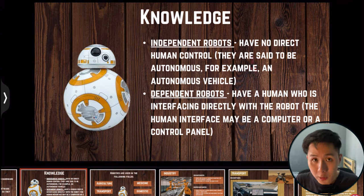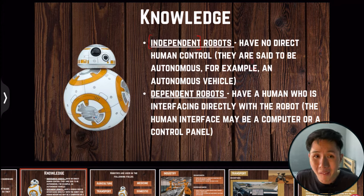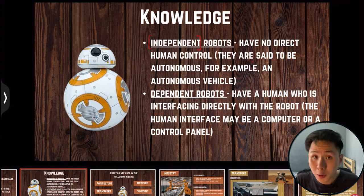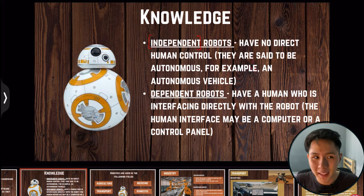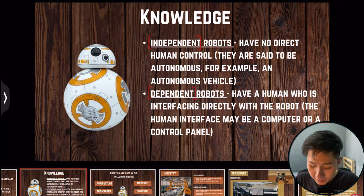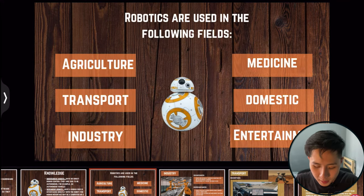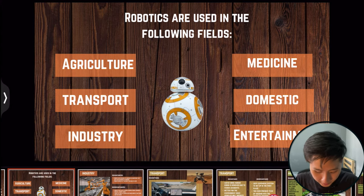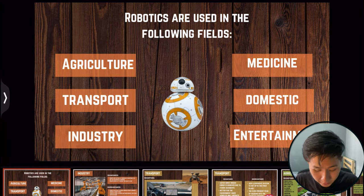There are two types of robots. Independent robots are pretty much self-sufficient and don't require human control — for example, an autonomous bus doesn't need a driver. Dependent robots have a human who is directly interfacing with and controlling the robot.